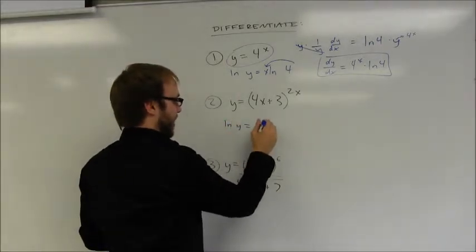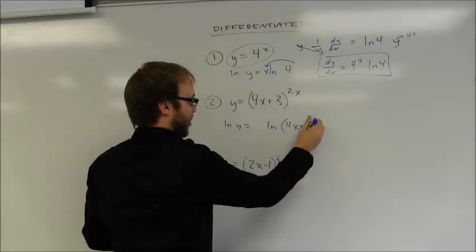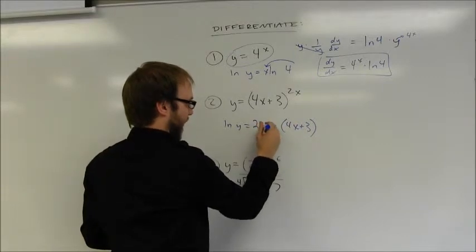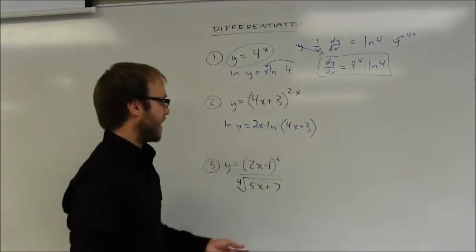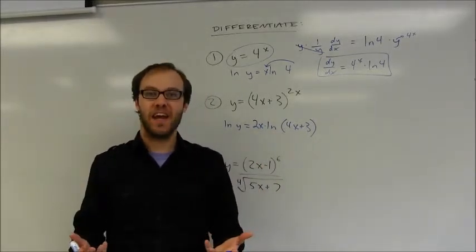ln of y equals the natural log of 4x plus 3 raised to the 2x power. But I'm going to take that 2x power around out in front. And you'll notice this time I have variables in both parts of the product. So I am going to have to use the product rule. This is going to be a little bit more complicated.